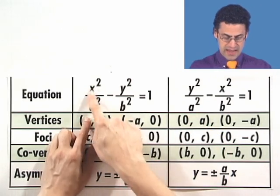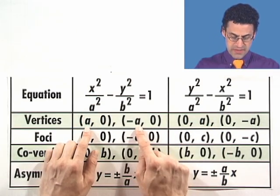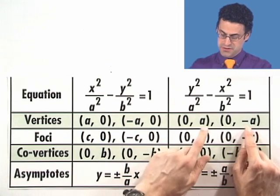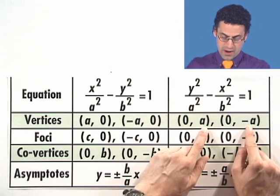The vertices, if we have the x coming first, the vertices are going to be along the x-axis. If the y comes first, the vertices are going to be on the y-axis.